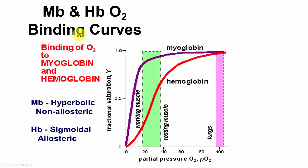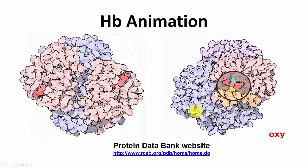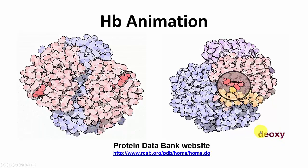Comparing myoglobin and hemoglobin O2 binding curves: myoglobin has a hyperbolic binding curve, while hemoglobin has a sigmoidal (allosteric) binding curve. Myoglobin is non-allosteric with one subunit; hemoglobin is allosteric with four subunits. The animation from the Protein Data Bank shows the heme going from the deoxy to the oxy state.